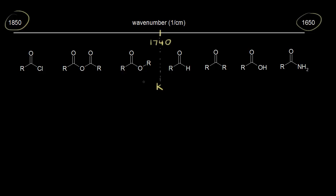Looking at an ester — from the video on carboxylic acid derivative reactivity — the inductive effect is a little bit stronger than resonance. Since induction increases the strength of the carbonyl, we increase the value for K a little bit, which increases the frequency of bond vibration and increases the wave number. So the wave number goes up a little bit from 1740 to approximately 1745 — that's approximately where you'd find the carbonyl signal for an ester.